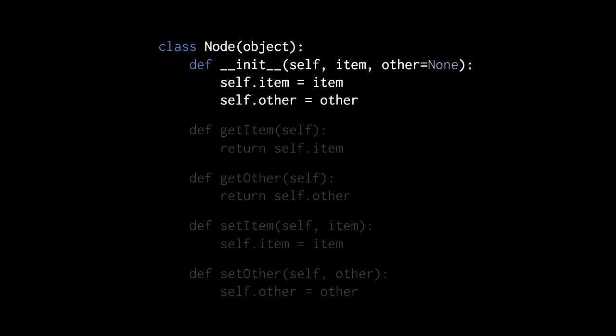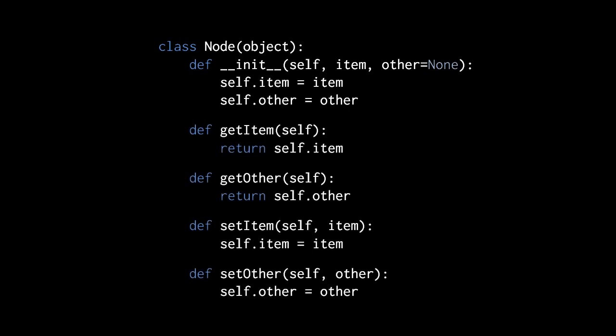The item attribute is the value of the node — the item represented by this node — whereas other is a reference pointing to some other node. By default it's none, so by default we have a node which doesn't point to any other node. As for the other methods of our class: we want to retrieve the item with getItem, retrieve the node pointed to by this node with getOther, change the value with setItem, or change which other node is pointed to with setOther. So a getter and setter for the value of the node, and a getter and setter for the reference to another node.